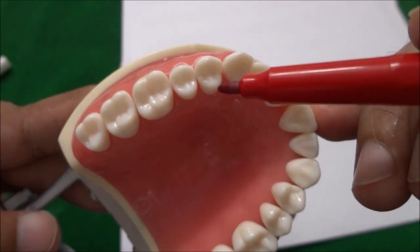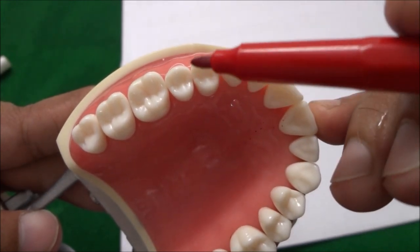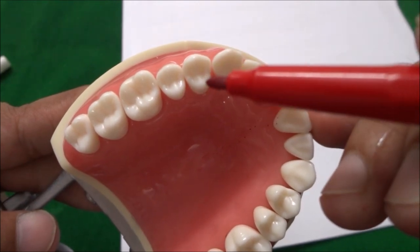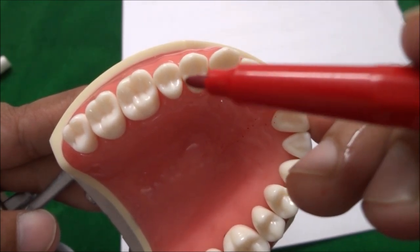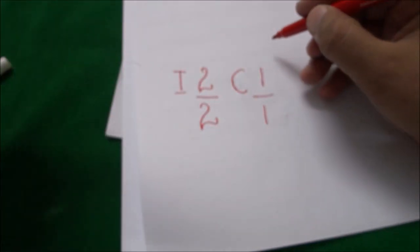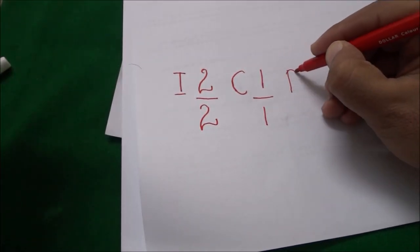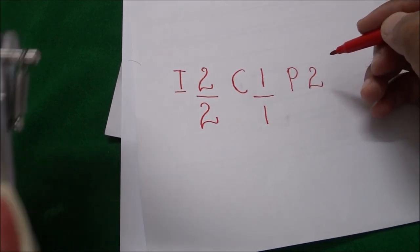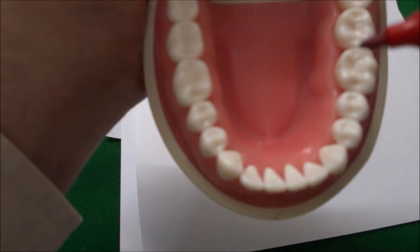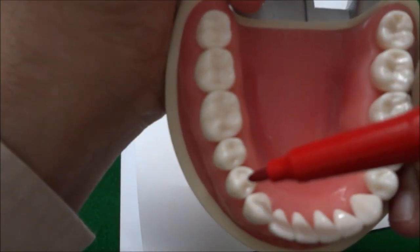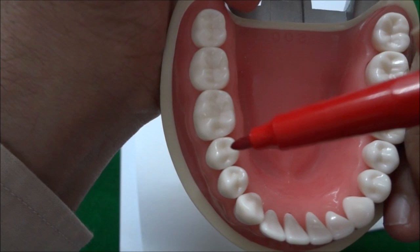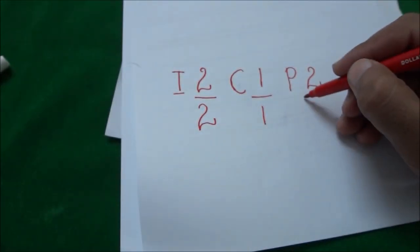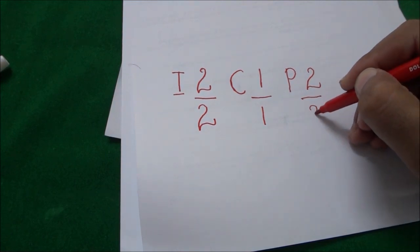In the maxillary arch there is another type of tooth known as the premolar, which erupts in place of the deciduous molars. There are two premolars. So we write P for premolar and two in the maxillary arch. Similarly, in the mandibular arch there are also two premolars — the first premolar and the second premolar. So we draw a line and below that line we write two.